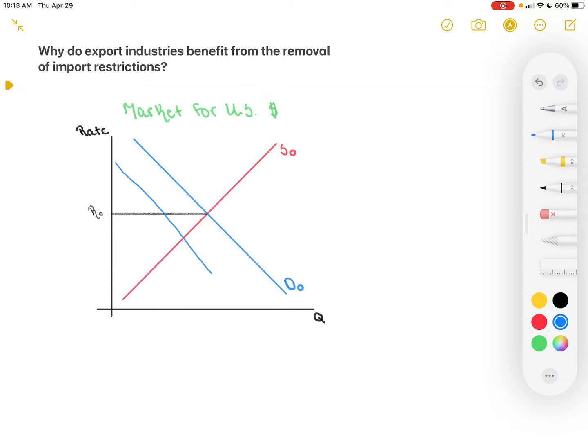We're going to see our demand curve shift from D0 to D1. When our demand curve shifts downward, we see that our exchange rate changes as well. We go from R0 to R1.